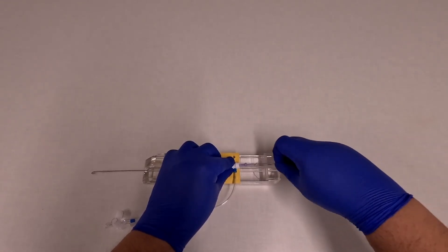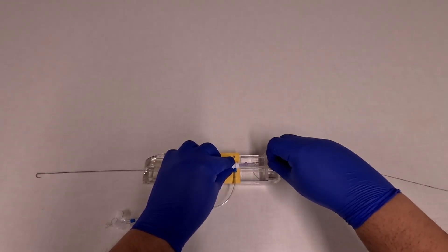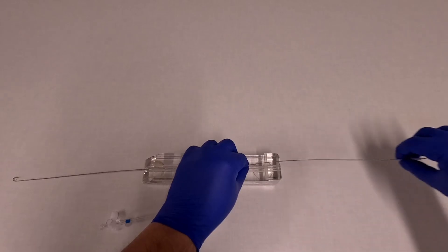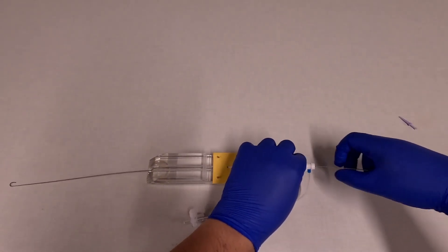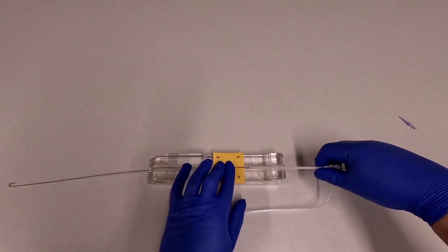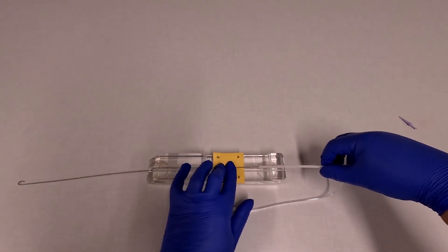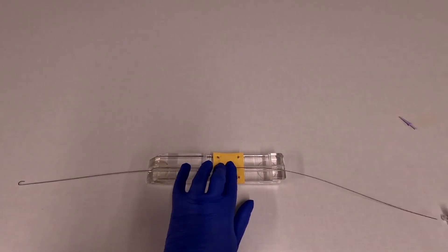So insert the wire like you normally would. And then once you have a sufficient amount inside you're going to walk the sheath out while maintaining the wire in the lumen. You're going to need to maintain hemostasis at the site. So manual hemostasis with your fingers.